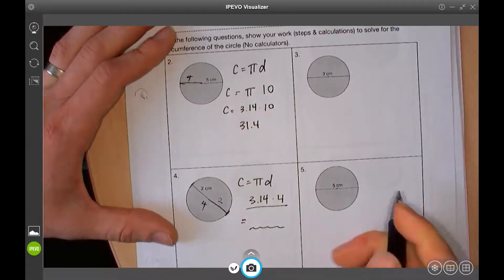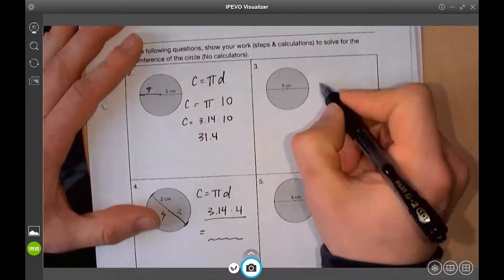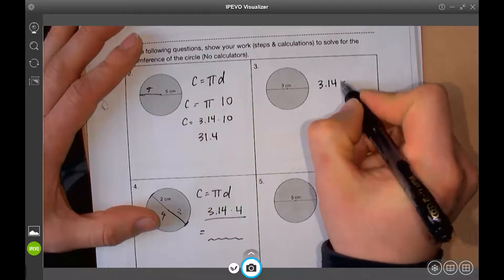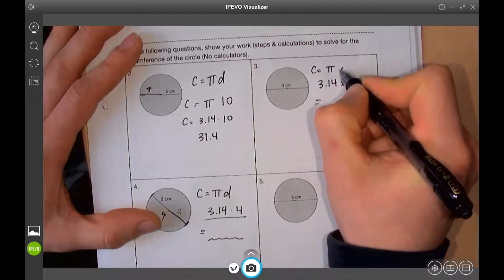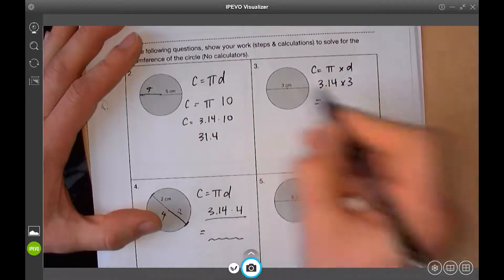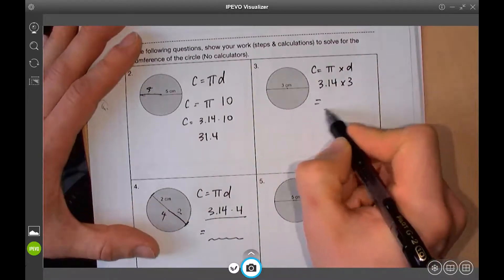Okay, again, this one here already shows you the diameter. So, you just show 3.14 times 3 because circumference is pi times D, and D is 3. So, 3.14 times 3. You get that?